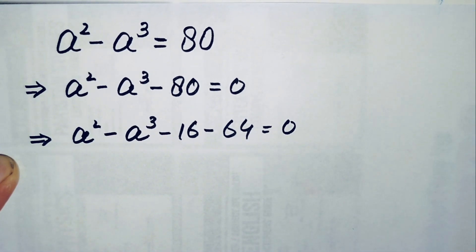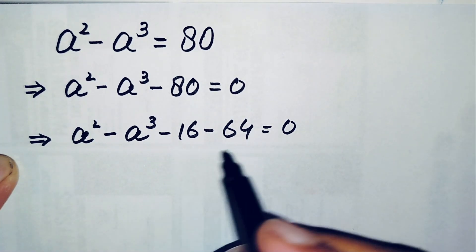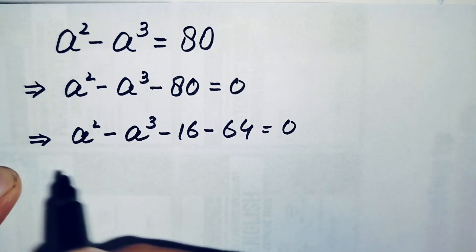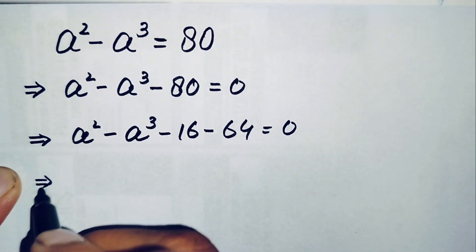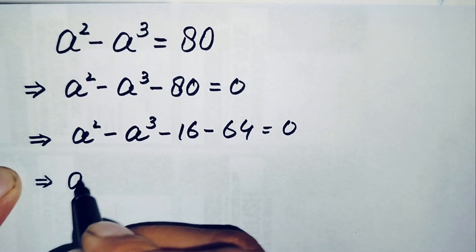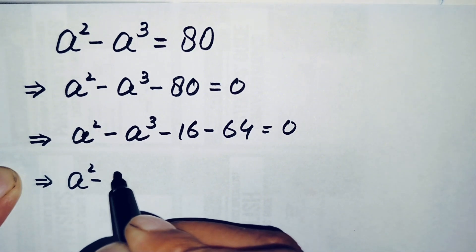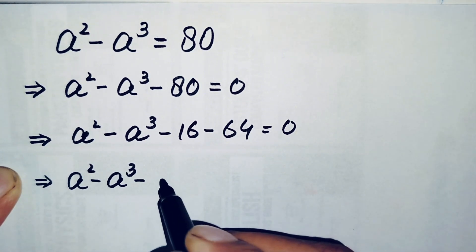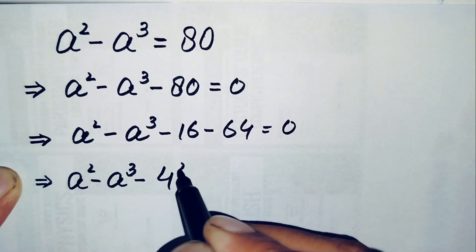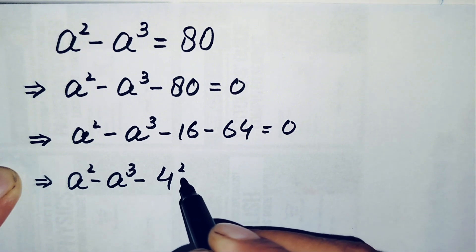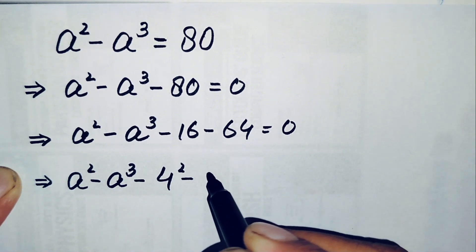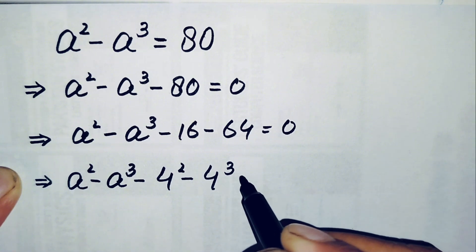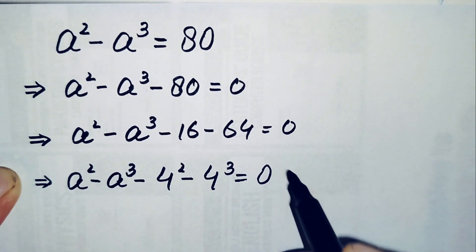Here we will spread this minus 80 as the sum of minus 16 and minus 64. We will then change 16 and 64 into exponential form, so we can write minus 16 as negative 4 squared and minus 64 as negative 4 cubed, giving us a squared minus a cubed minus 4 squared minus 4 cubed is equal to 0.